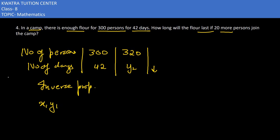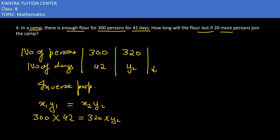Now let's use the formula of inverse proportion, which is x1 × y1 = x2 × y2. We substitute x1 = 300, y1 = 42, x2 = 320, and we need to find y2. Dividing, y2 = (300 × 42) / 320.